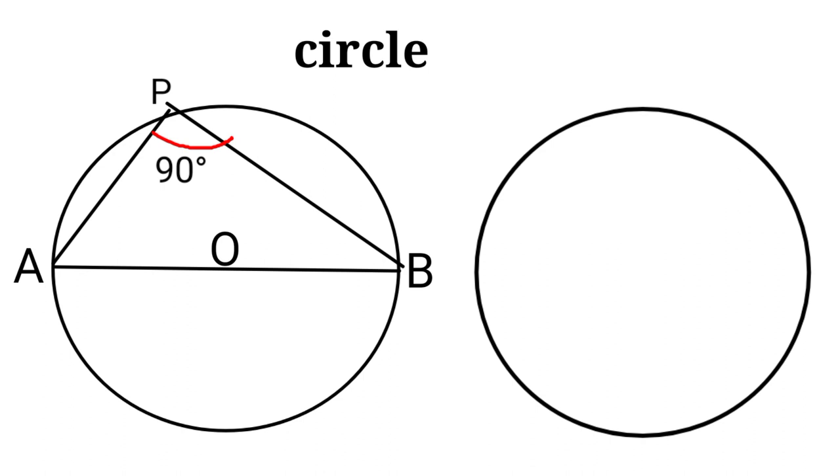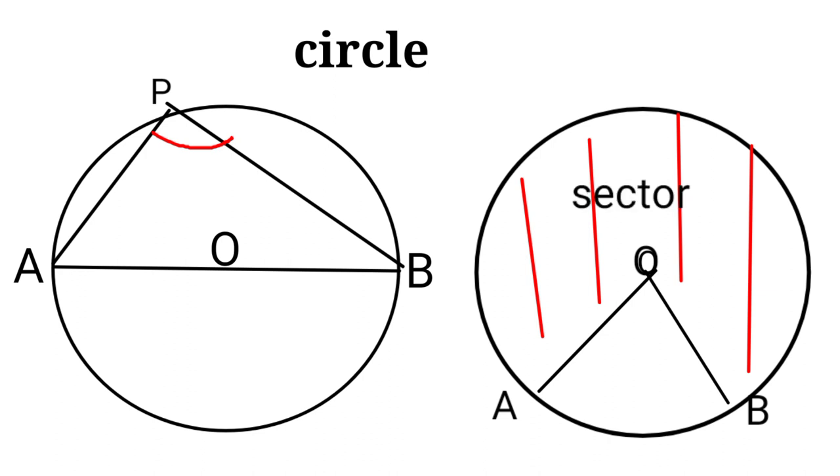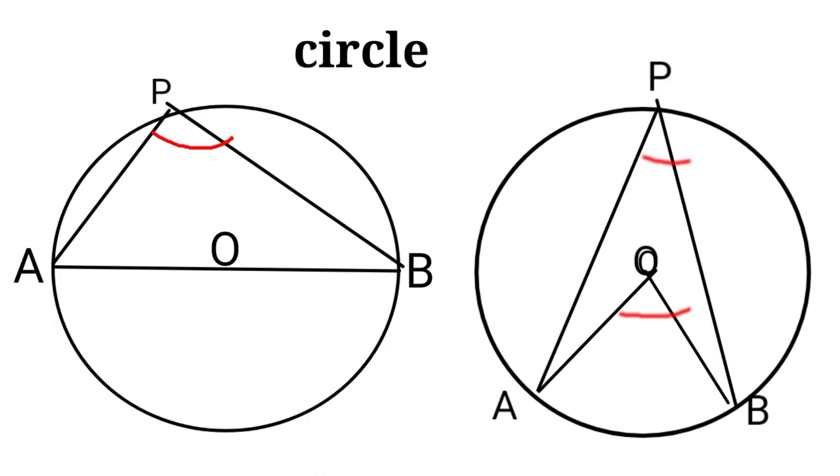If OA and OB are inclined at some angle, then AOB divides the circle into two sectors: the larger one is the major sector and the smaller one is called the minor sector. Hence, the angle of the minor sector is half that of the major sector.